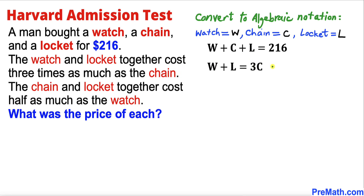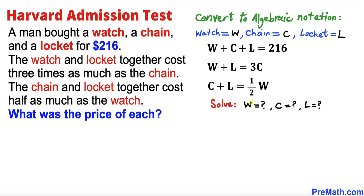From the next sentence, watch and locket together cost three times as much as the chain, so W + L = 3C. Finally, chain and locket together cost half as much as the watch, so C + L = W/2. Now we are going to solve for W, C, and L.